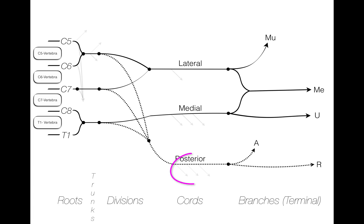The three that branch from the posterior cord, a dashed line, travel posteriorly to their destination. Nerves that branch from the lateral cord or medial cord, both using solid lines, travel anteriorly to their destination.